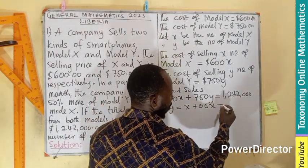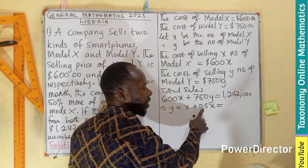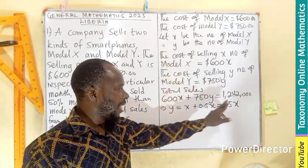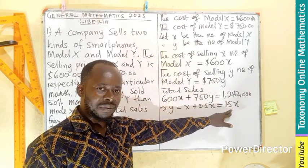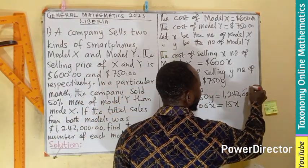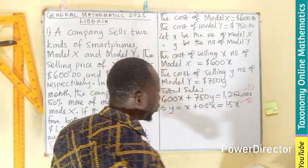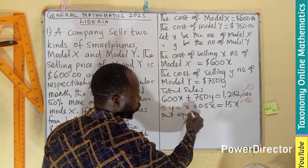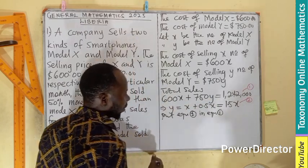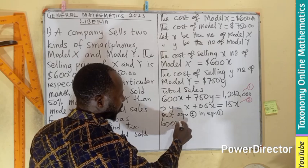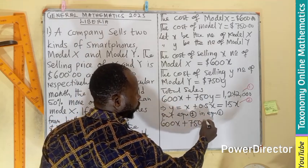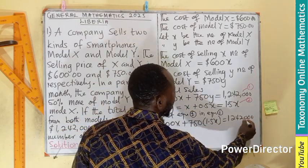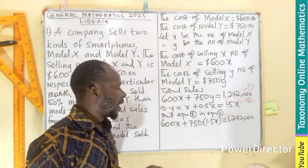We can write y = 1.5x — that is y expressed in terms of x. This is Equation 1 and this is Equation 2. Substituting Equation 2 into Equation 1, we get: 600x + 750(1.5x) = 1,242,000. Note that 750 times 1.5 is the same as 750 times 3 divided by 2, so let's compute that multiplication.